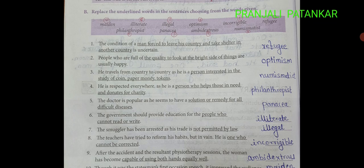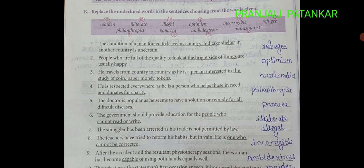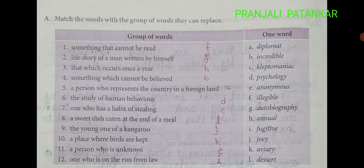7. The smuggler has been arrested as his trade is not permitted by law — Illegal. 8. The teachers have tried to reform his habit but in vain — one who cannot be corrected — Incorrigible. 9. Capable of using both hands equally well — Ambidextrous. 10. First occasion — Maiden. Note: In the match the pair exercise, number 1 'something that cannot happen' should be matched with Illegible corrected to Illiterate.